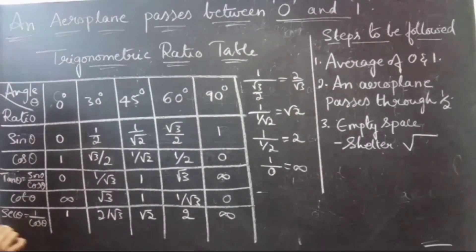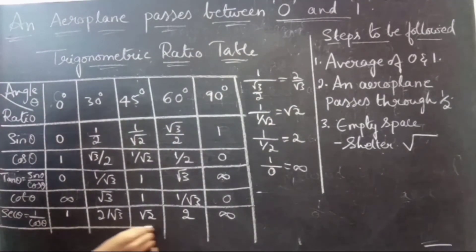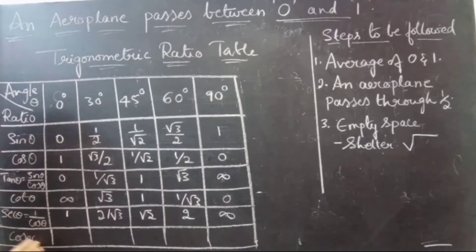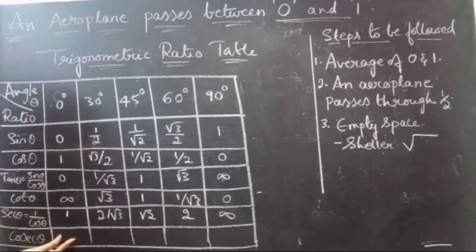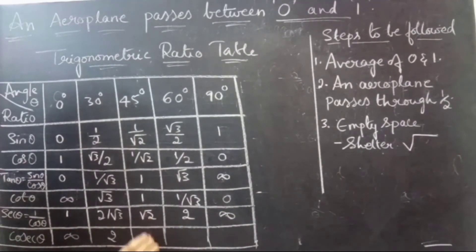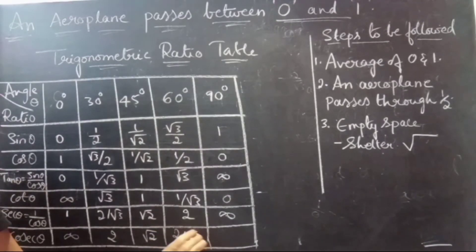Now we will find for cosecant. Cosecant theta is the reverse of secant. Write in reverse order: infinity, 2, root 2, 2 by root 3, and 1.